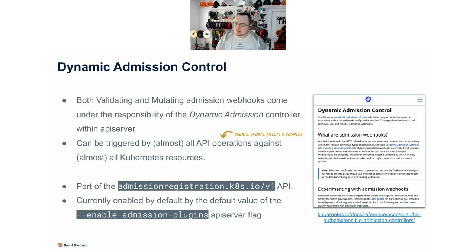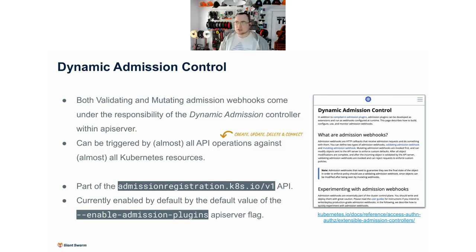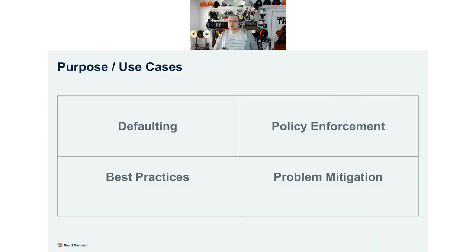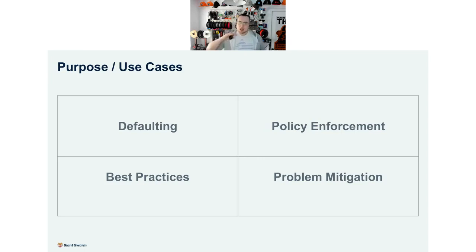Webhooks are enabled by default in all recent versions of Kubernetes, but if you decide you want to disable them there is an API server flag — enable-admission-plugins — that you can use to override this behavior. The documentation on the Kubernetes website is fantastic; I highly recommend going and having a look. Now I want to go through the purposes and use cases, and I generally see them fitting into four major categories: defaulting logic, policy enforcement, best practices, and problem mitigation.